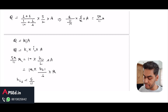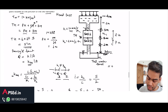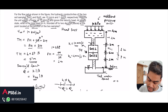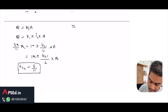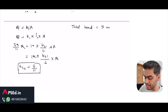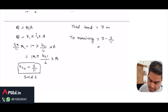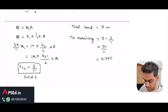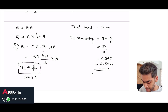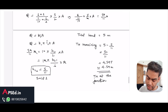Now that we have the head loss in soil 1, we can find the total head at the junction. The initial total head was 5 meters. Subtracting the head loss in soil 1: total head at junction = 5 − 5/11 = (55 − 5)/11 = 50/11 ≈ 4.54 meters. That is the total head at the junction, which is the answer the question asked for.